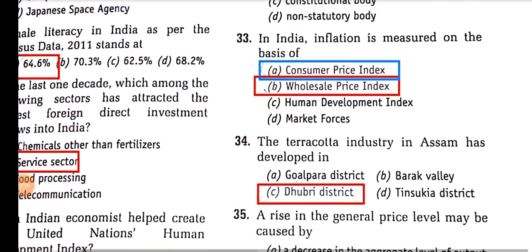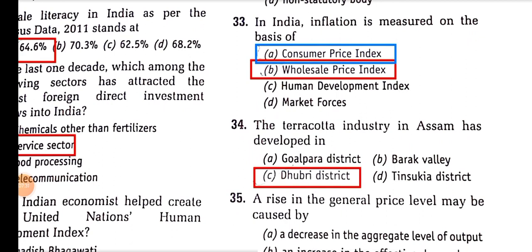In India, inflation was measured on the basis of the Wholesale Price Index (WPI) up to 2014. But after that, the RBI replaced WPI with CPI as the measure to actually measure inflation.